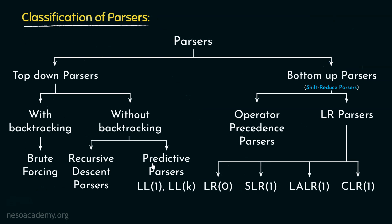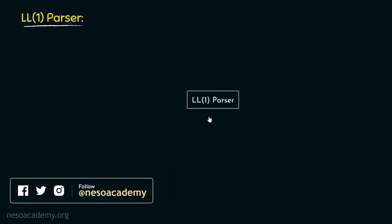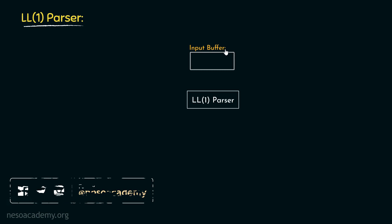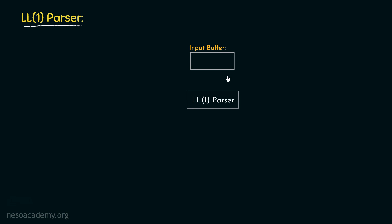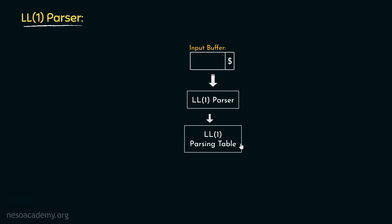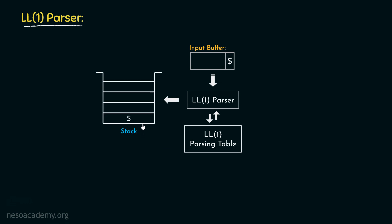In this session, we are going to start learning about the predictive parsers, that is LL1 parsers. For the construction of the LL1 parser, we will need a few components. First, we will need an input buffer where we will store the input. The inputs are always kept with the dollar symbol at the end. From the input buffer, the LL1 parser will receive the inputs. For the construction of the parse tree, the LL1 parser will need an LL1 parsing table. The LL1 parser will also need a stack, and the bottom of the stack will be denoted by the dollar symbol. So this is the organization of the LL1 parser.